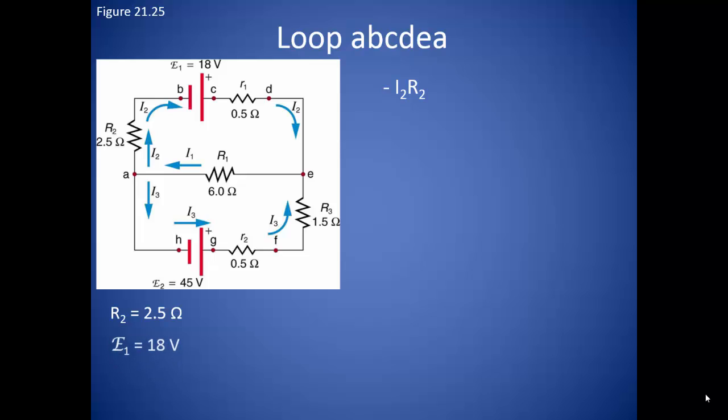The next device in the circuit is battery 1 that has an EMF of 18 volts. Since we are going across the negative terminal of the battery to the positive terminal, the potential is going to increase. So we will add the EMF of the first battery. We also need to take the internal resistance of the battery into account. This will cause another drop in potential according to Ohm's law. So we will subtract the product of current 2 times the little r1.